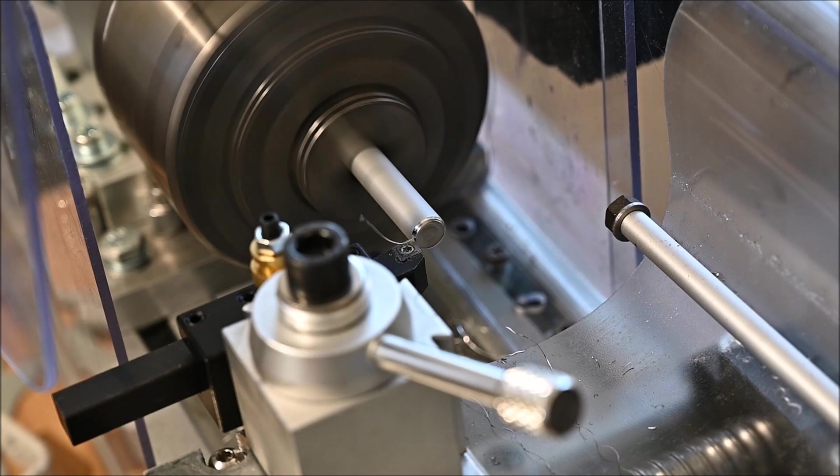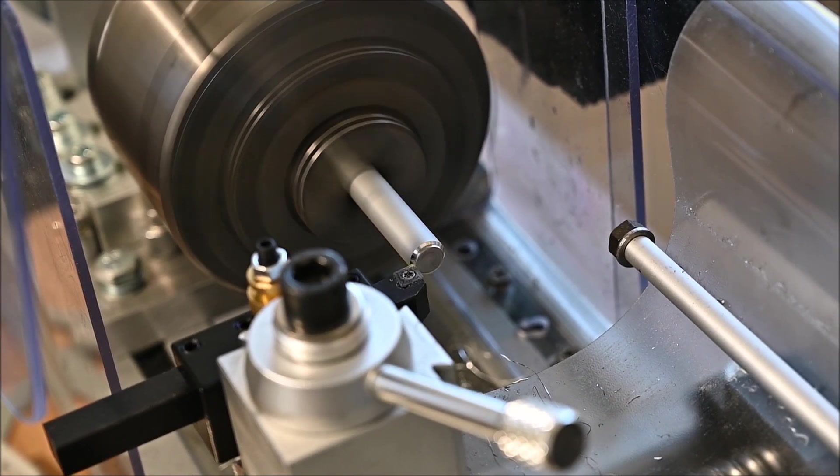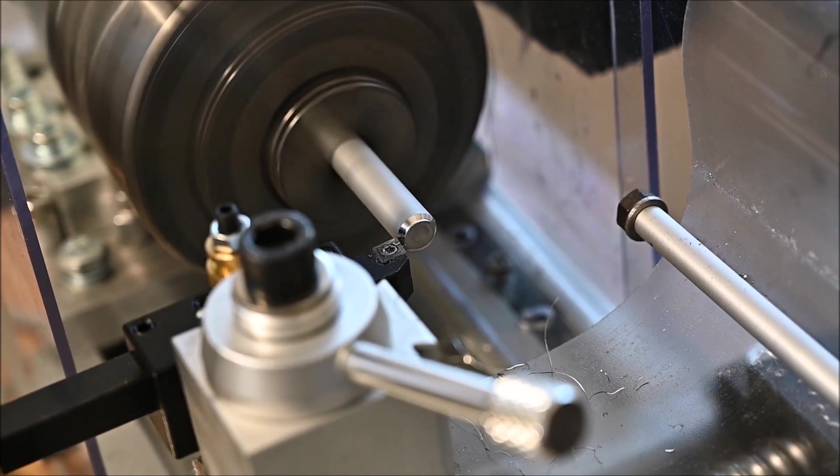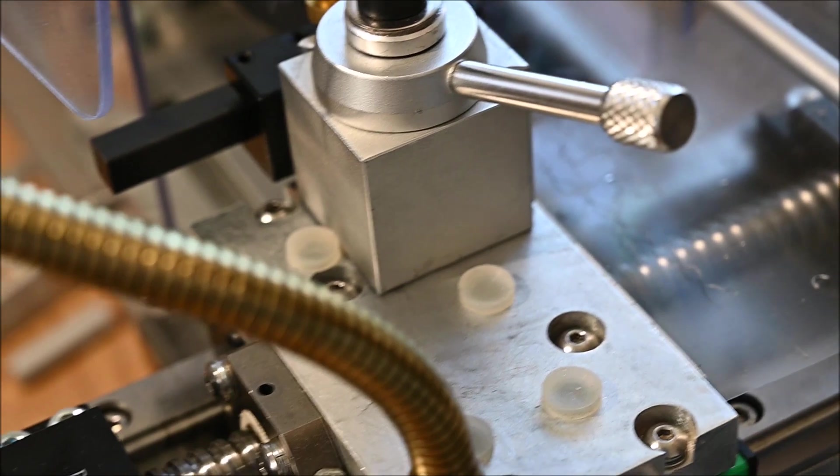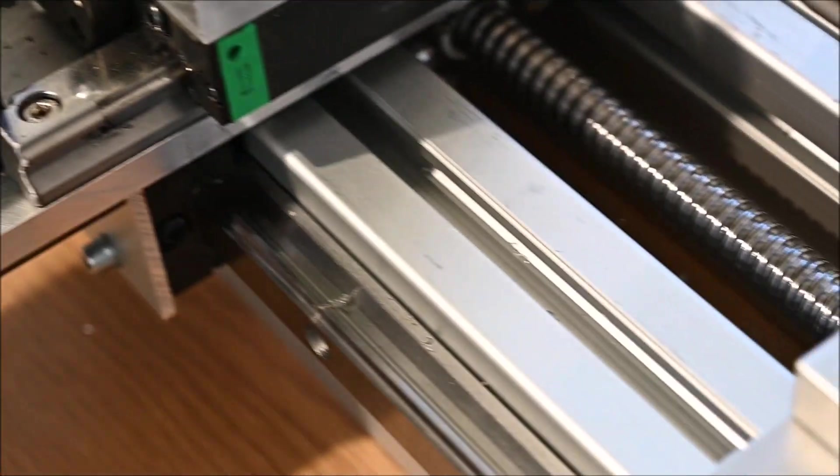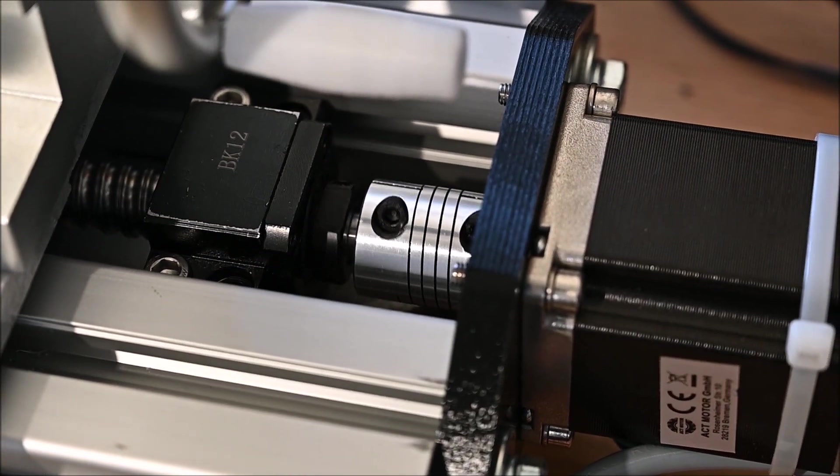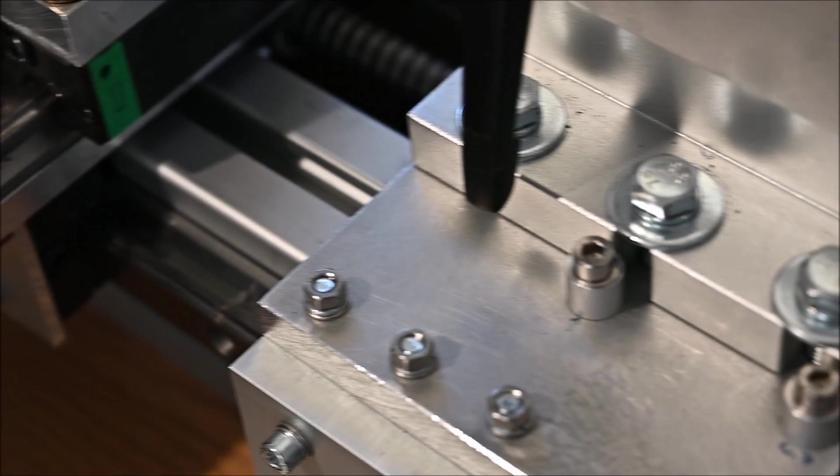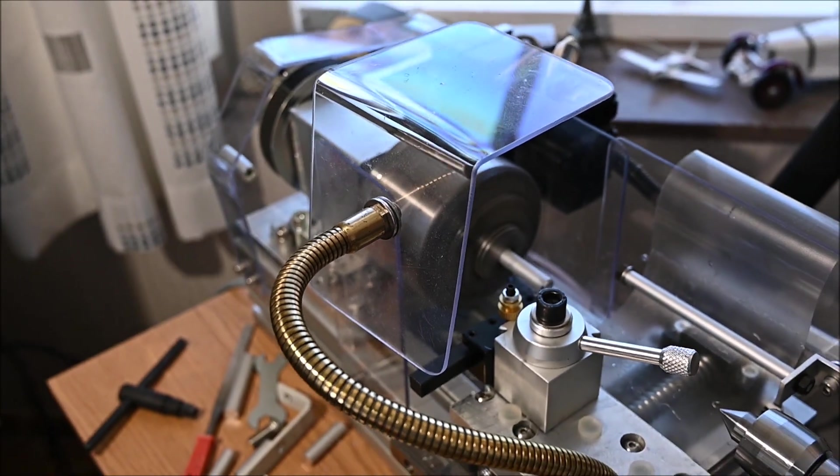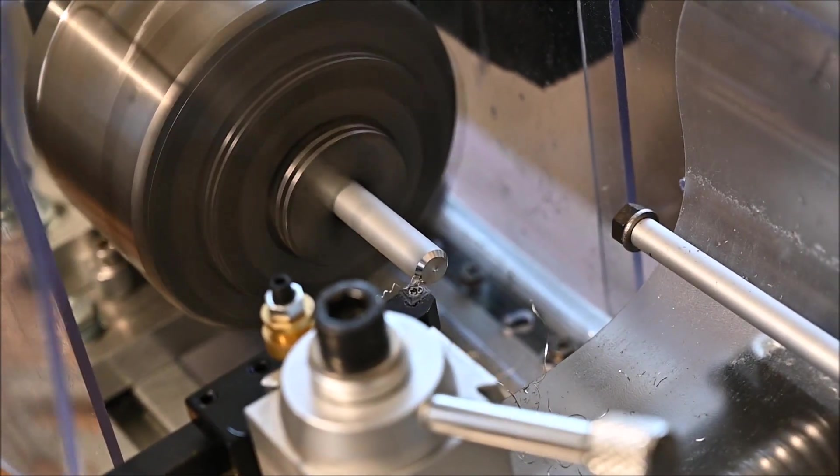This will be the second time I am actually threading with my lathe, because the first time I threaded a 10mm rod just to see if I can do it, and it actually works very well. I'm using UCCNC, and it is pretty simple to thread. You just have to calculate the number of turns and that's basically it. You just enter the degrees the number of turns correspond to and just thread. So it's very simple.